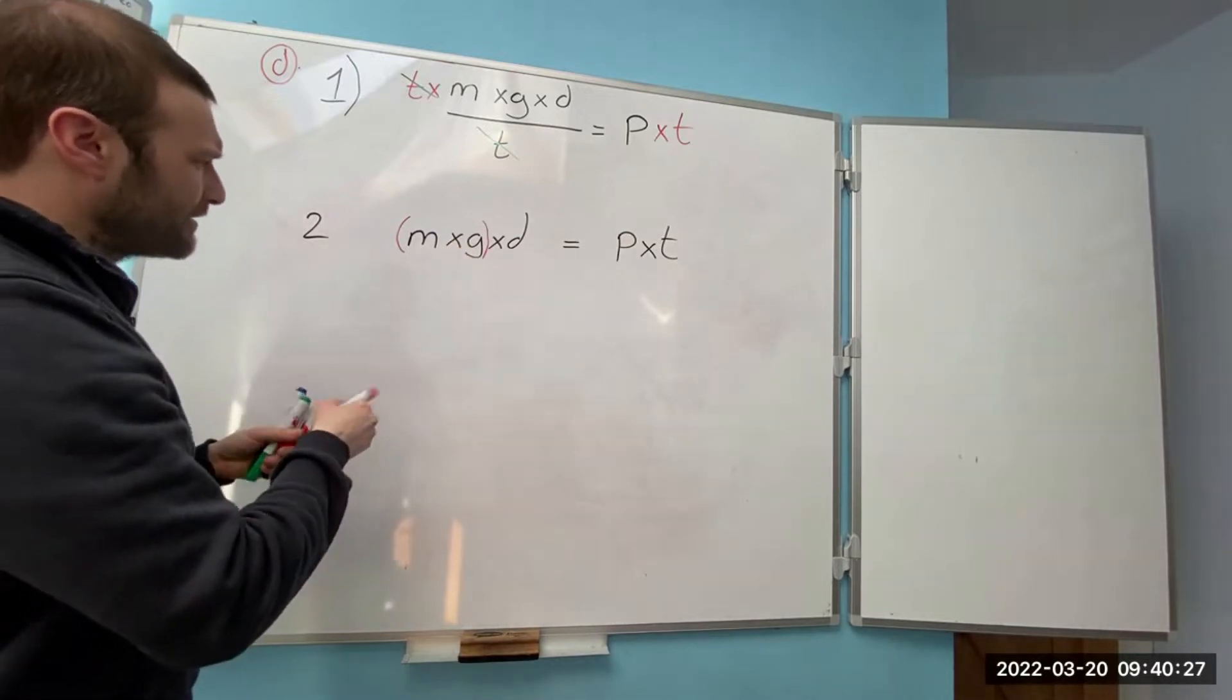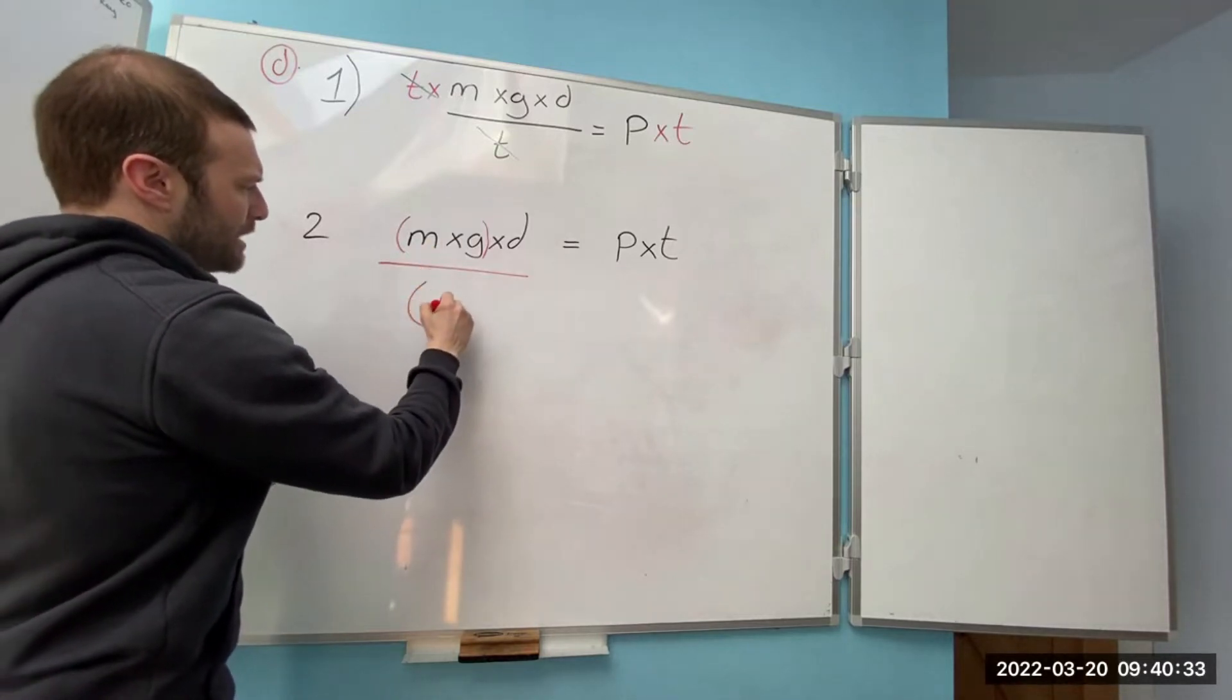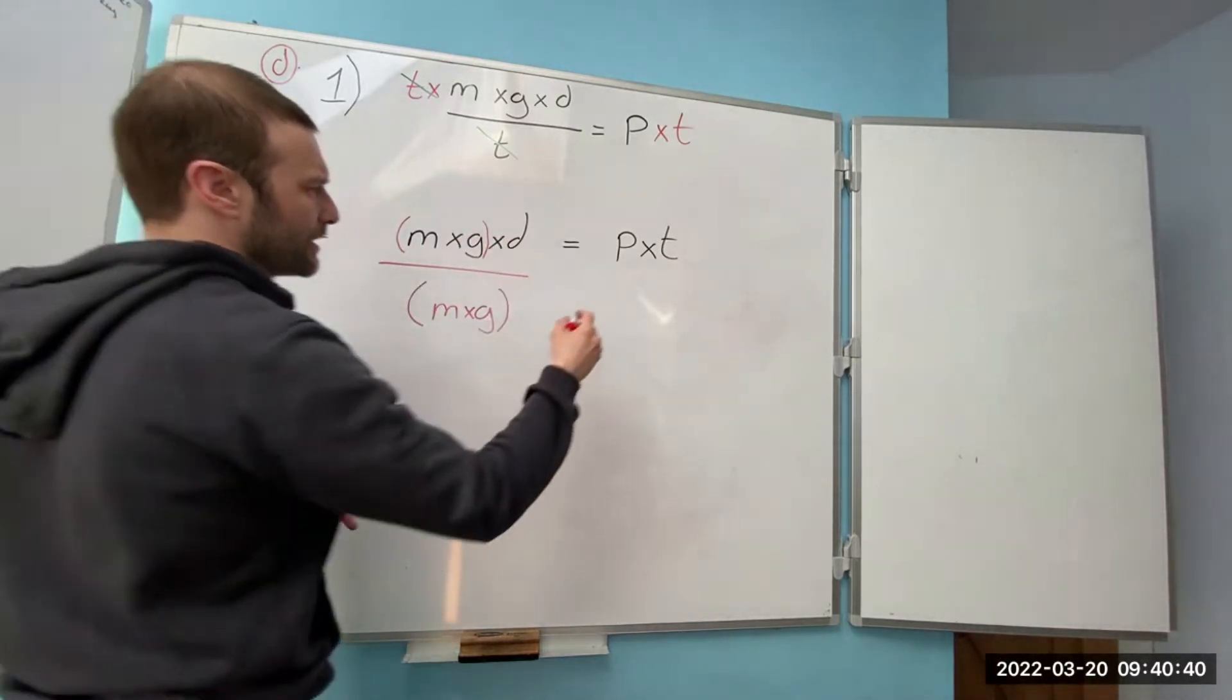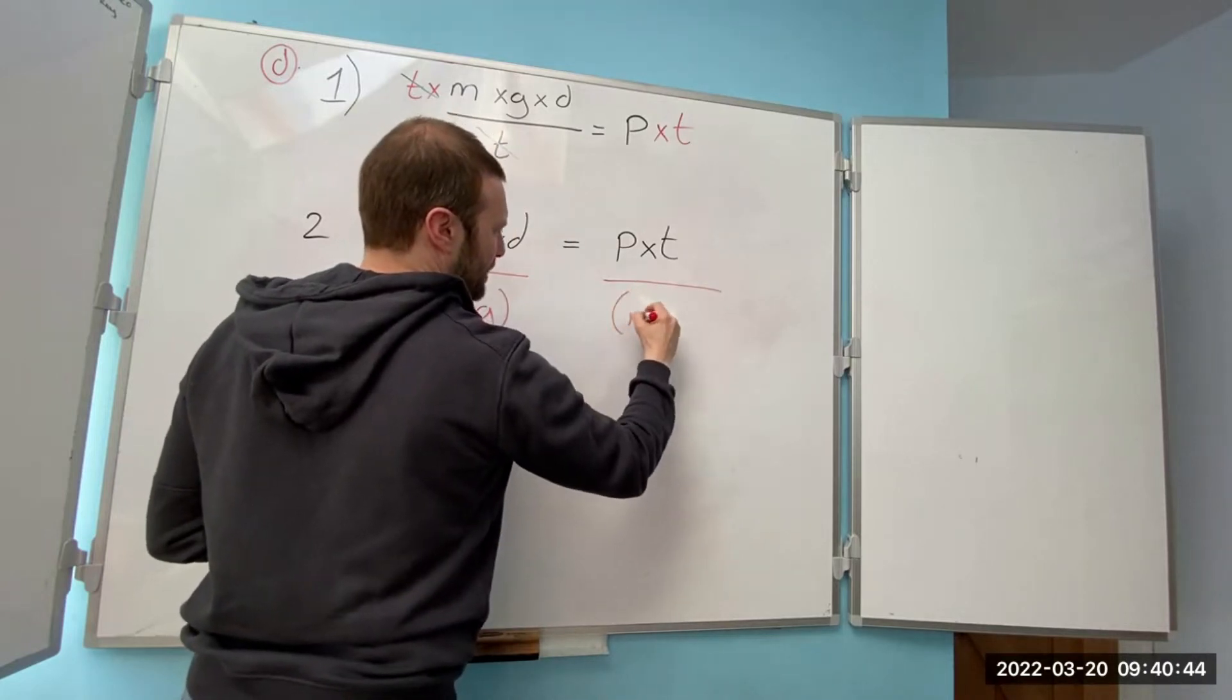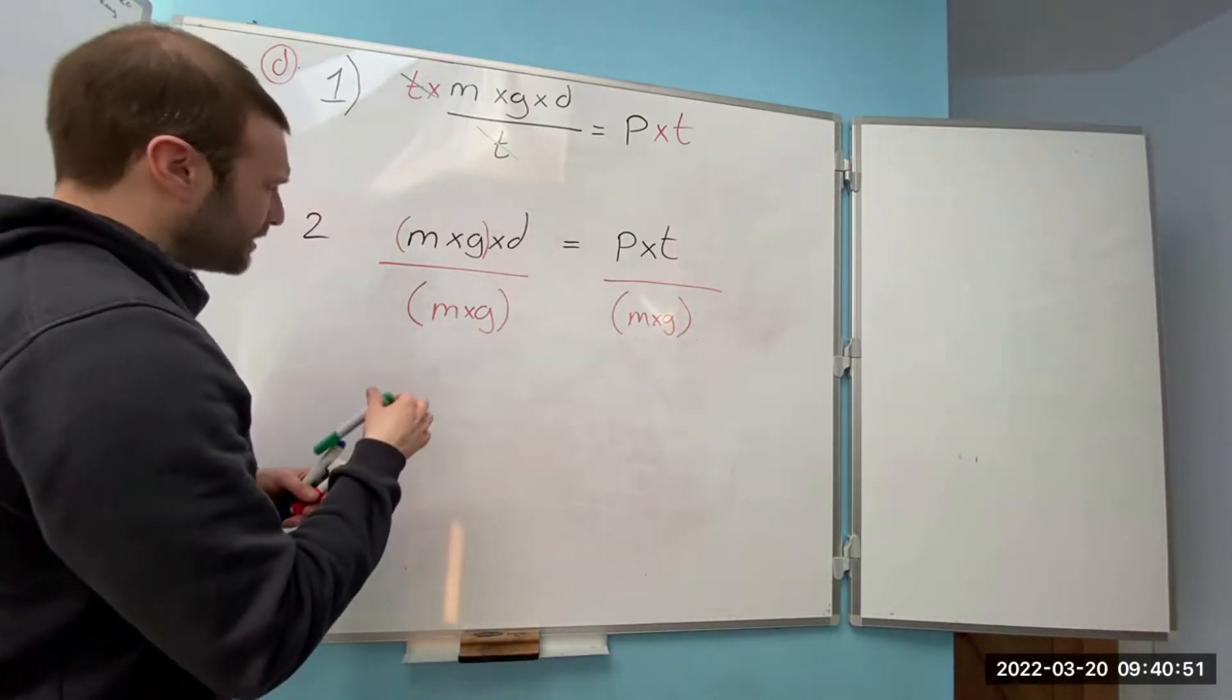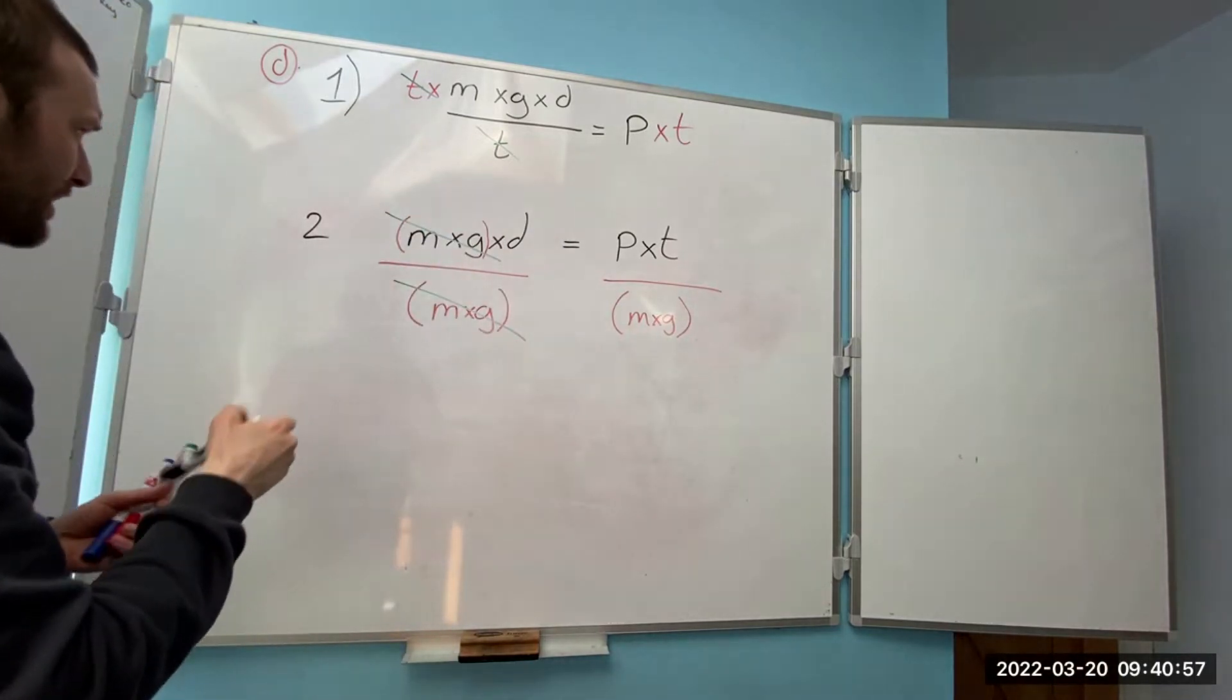So mass times gravity, if I divide that out because it's times the distance and I move that m times g down there. Whatever I do this side I have to do the other side, so divide and I've got mass times gravity. Then what I can do is I can wipe out what I don't need to clean it up because that and that cancel each other out.